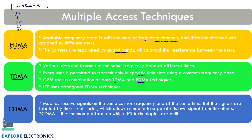GSM uses a combination of both TDMA and FDMA techniques, and LTE uses the Orthogonal FDMA technique. In CDMA, mobiles receive signals on the same carrier frequency at the same time, but signals are labeled using coding methods which allow multiple mobiles to separate their own signals from others. 3G technology uses CDMA as its multiple access technique.